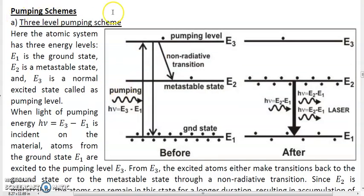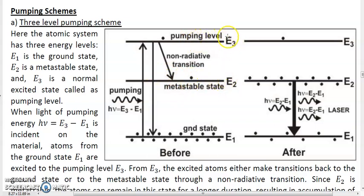As the name suggests, there are three energy levels involved in the pumping process. E1 is the lowest level — it is the ground state of the atom. E2 is a metastable state, meaning the atom can remain excited for a longer duration of time compared to a normal excited state; it is not stable, and atoms cannot remain there forever, but they can remain for a longer duration. The third level, E3, is the uppermost level, also called the pumping level. E3 is a normal excited state, not a metastable state.